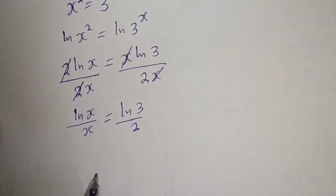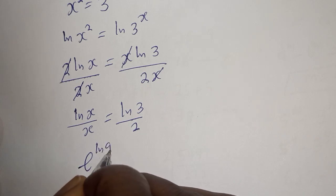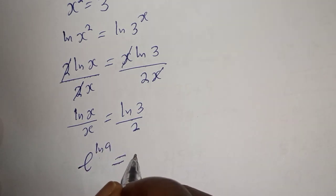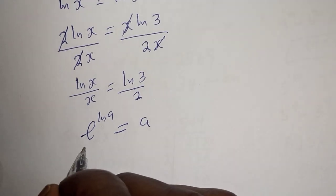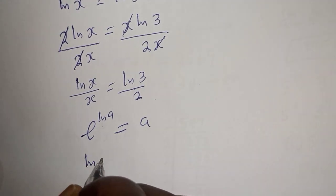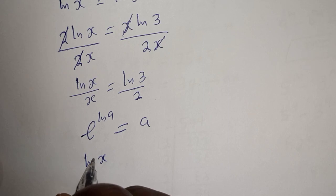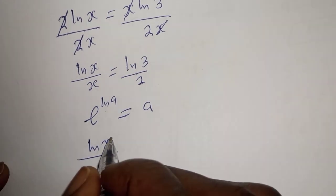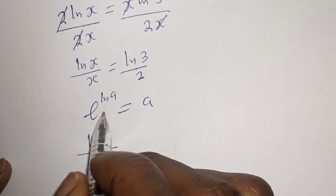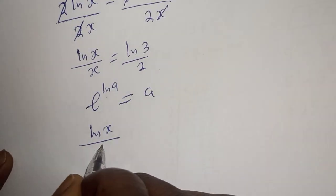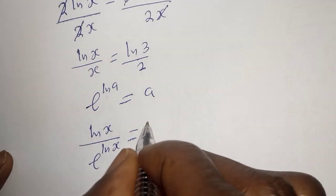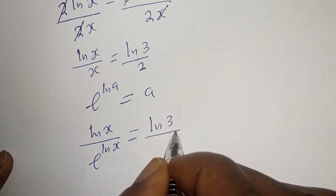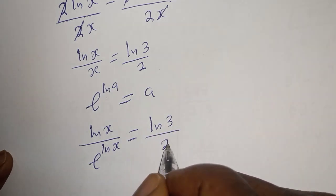Take note that if you have e raised to the power ln of a, this is equal to a. From here, this can be rewritten as: e raised to power ln of s is equal to ln of 3 over 2.